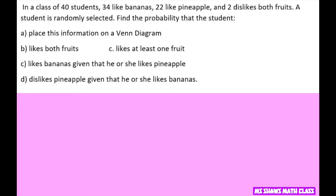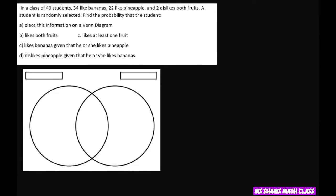A student is randomly selected and we're going to find the probabilities by using the sample space on a Venn diagram. So we have to fill out a Venn diagram. We'll let the first circle be the bananas, and the second circle be the pineapples. Now let's label this as A, B, C, and D.